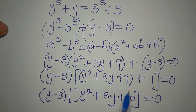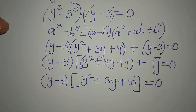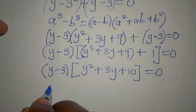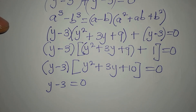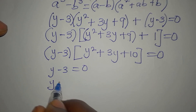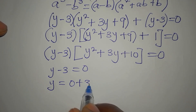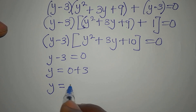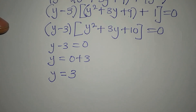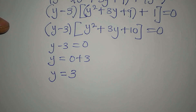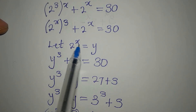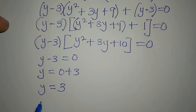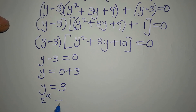Since we're multiplying two factors to get 0, we can say y minus 3 equals 0, which means y equals 3. But remember, we're not looking for y — we set 2 to the power of x equal to y. So replacing y with 2^x gives us 2 to the power of x equals 3.